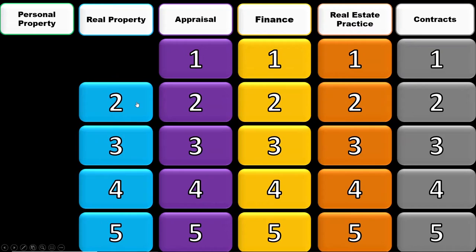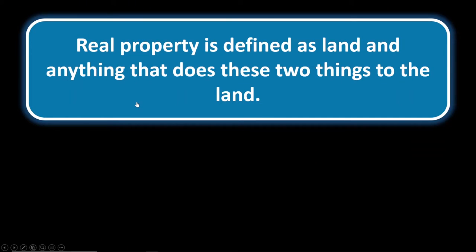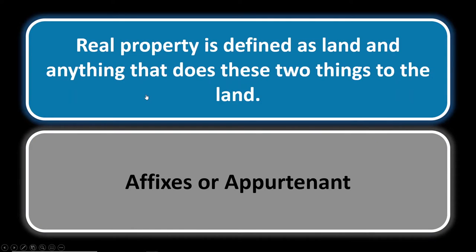Real property number two: real property is defined as land and anything that does two things to the land. When thinking of real property, we think of land, anything affixed to the land, and anything appurtenant to the land. Those three things compose real property.